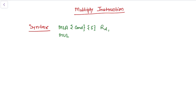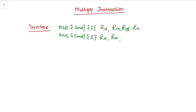Then we have RD, the destination register, followed by source registers RM and RS, and finally RN for multiply and accumulate. In the case of multiply only, we have the optional condition, optional S suffix, the destination register RD, and source registers RM and RS.